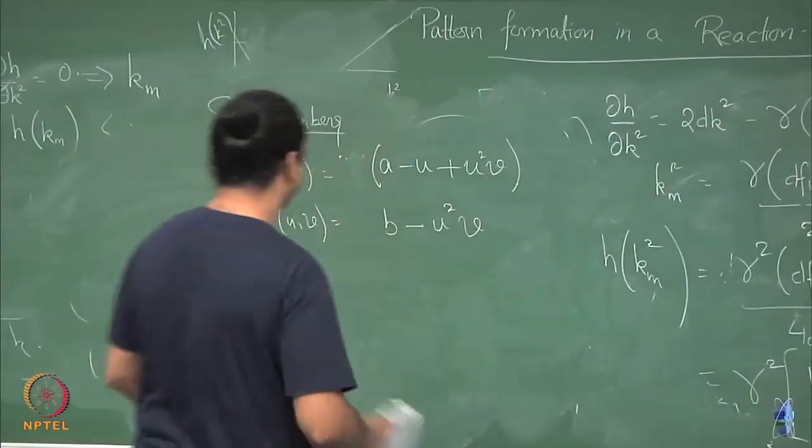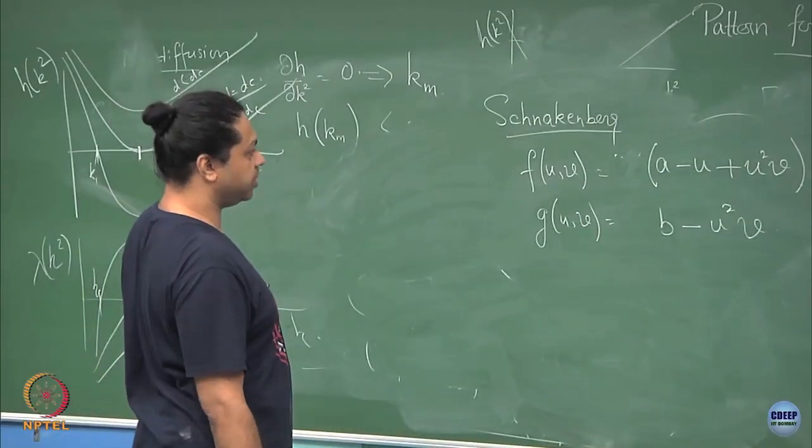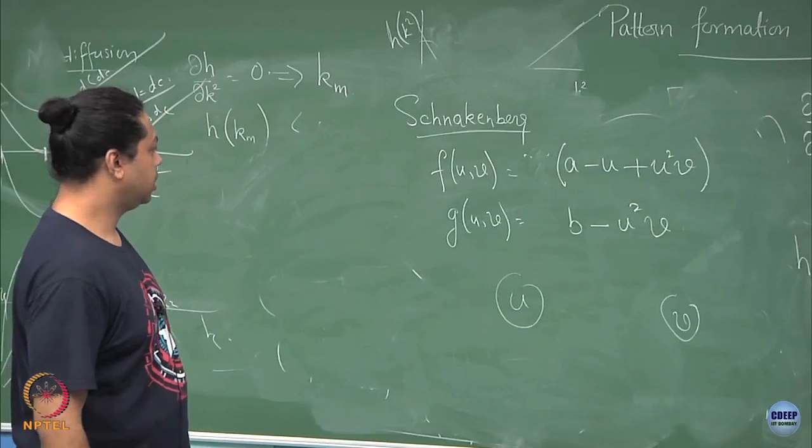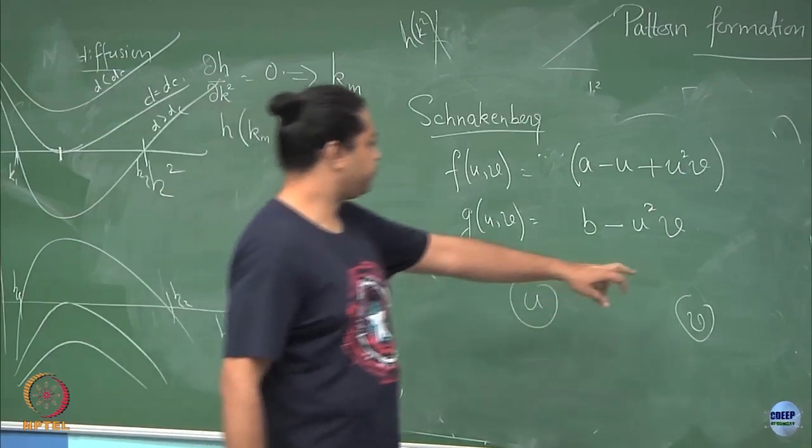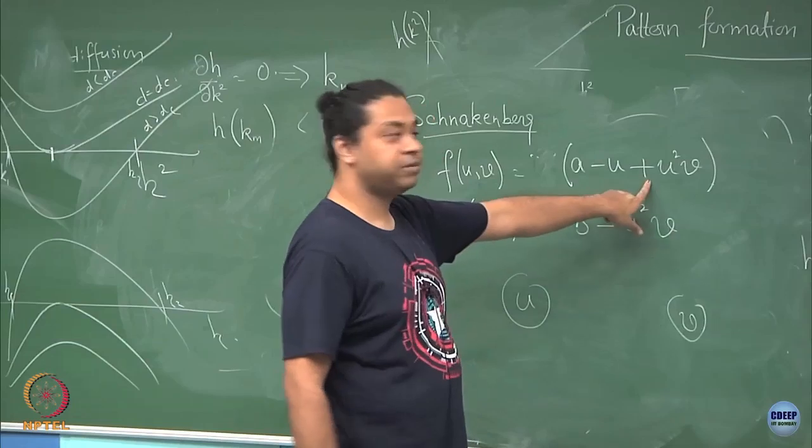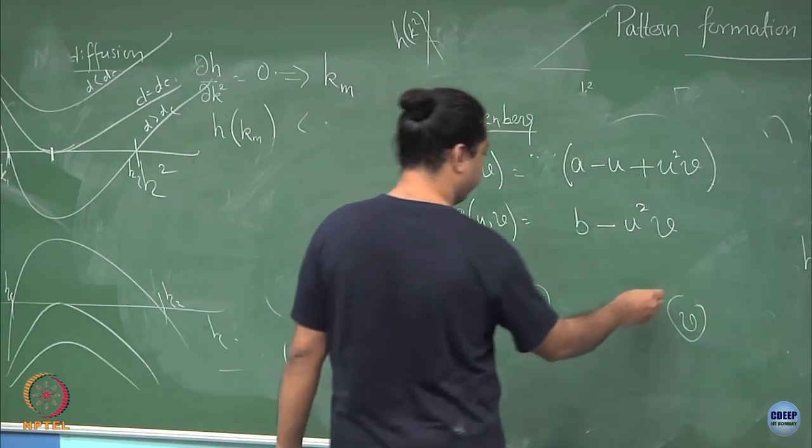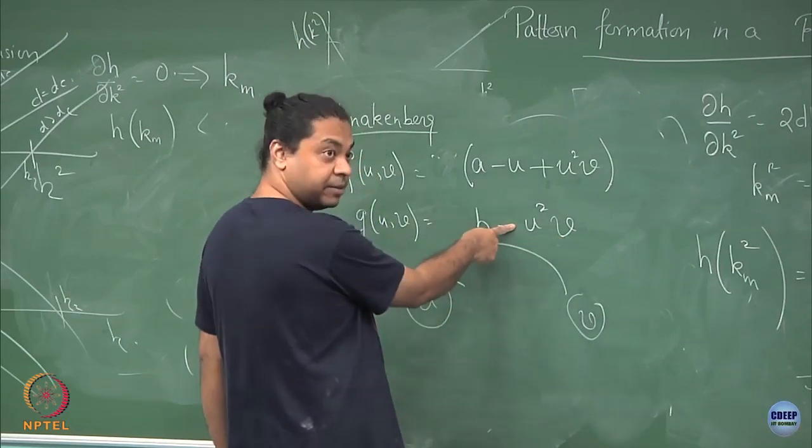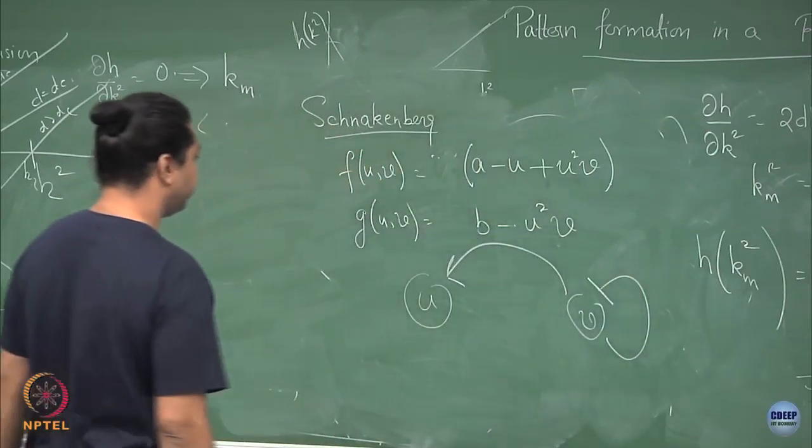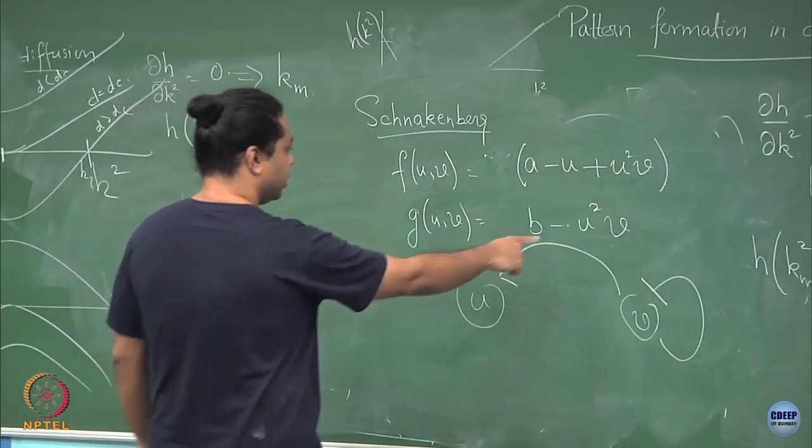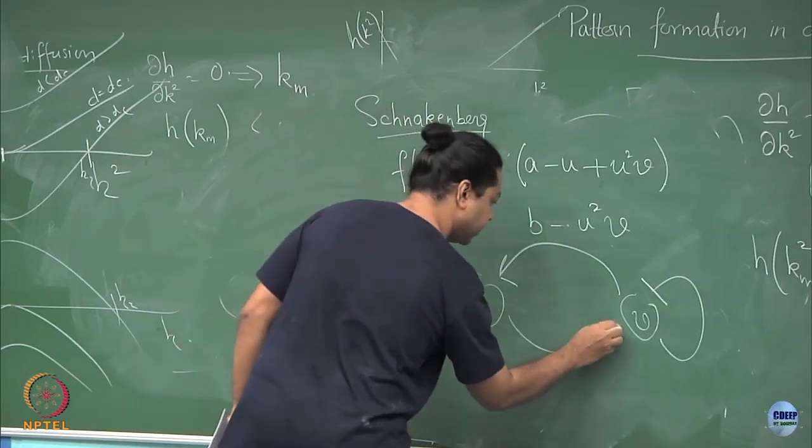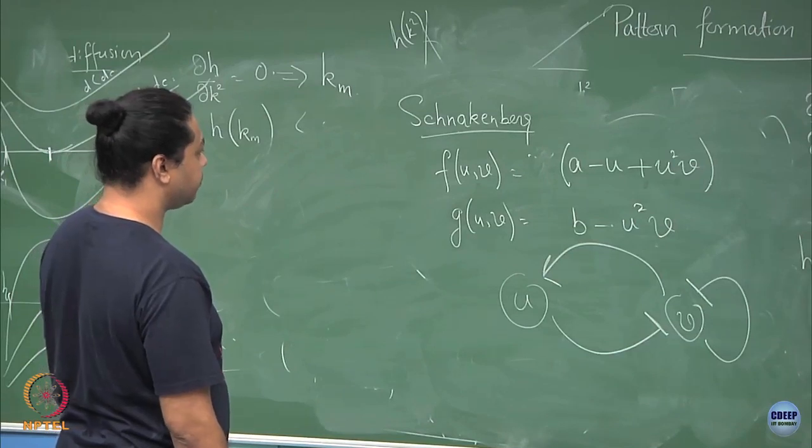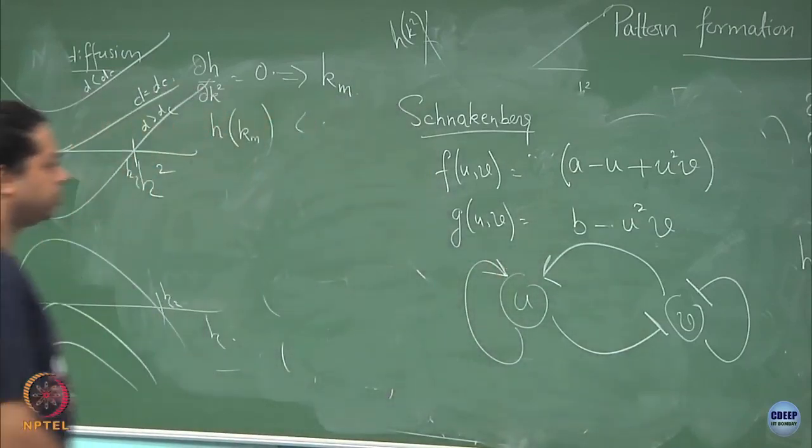Once I specify f and g, I know what is the chemical reaction and I can try to find out whether or not there will be a pattern. If I look at the species u and v, the more of v I have, the more of u I produce, right, because this comes with a plus sign. Which means this is an inhibition term to itself. The more of u I have, the less of v I have.